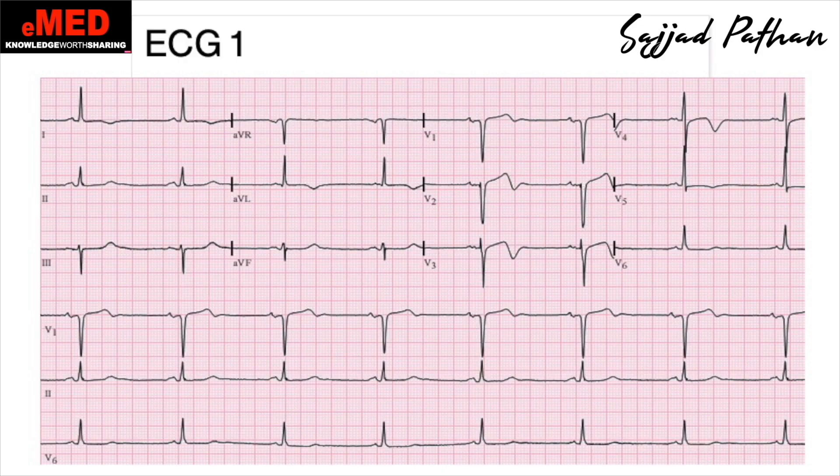The question here is: what are the abnormalities seen in the ECG? I see biphasic T waves in V1, V2, V3, and V4. Apart from that, I do not see any other abnormalities. So you could say there are biphasic T waves present in V1 to V4. What is the most likely diagnosis? It's Wellens Syndrome.